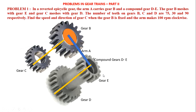Gear B meshes with gear E and gear C meshes with gear D. Another gear, gear C, is here, meshing with gear D. Since this is a reverted gear train, the axes of these two gears and these two gears must be aligned together. This is a compound gear — this is a reverted gear. Now these two will be in mesh, these two will be in mesh, and these axes are aligned together. This is the arm.